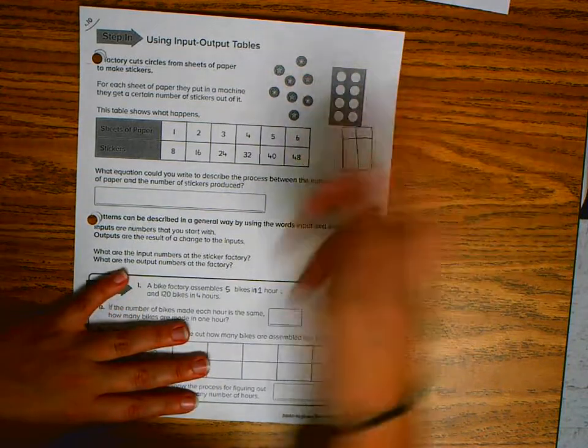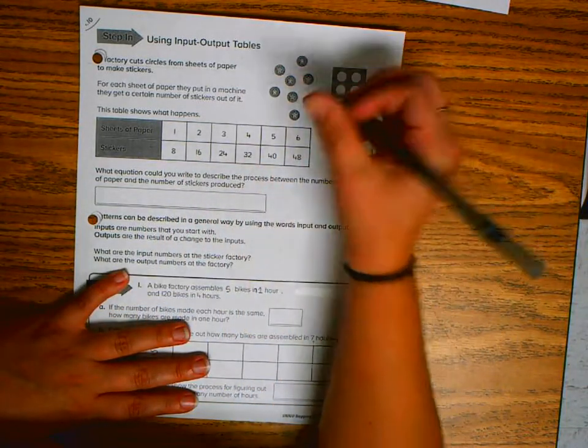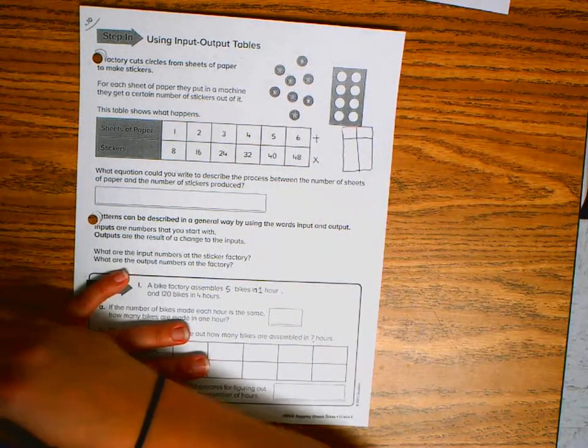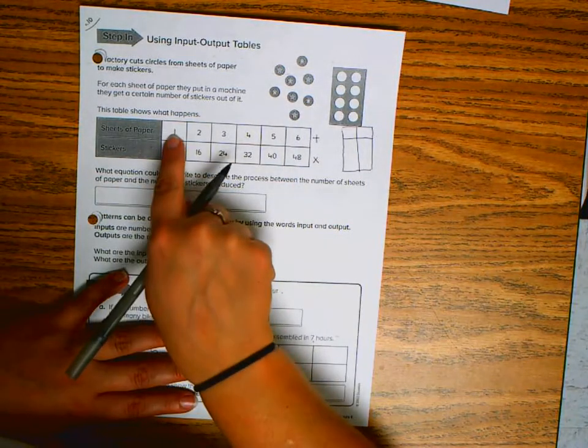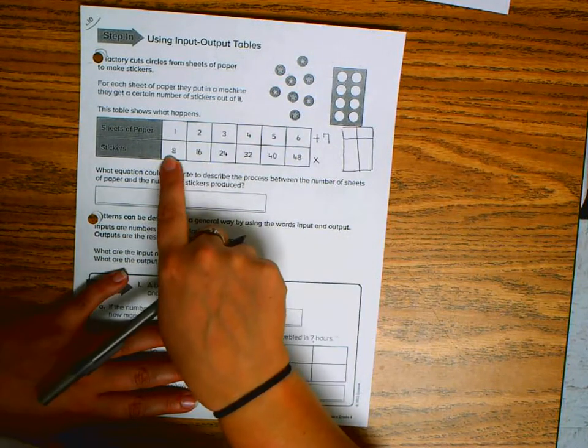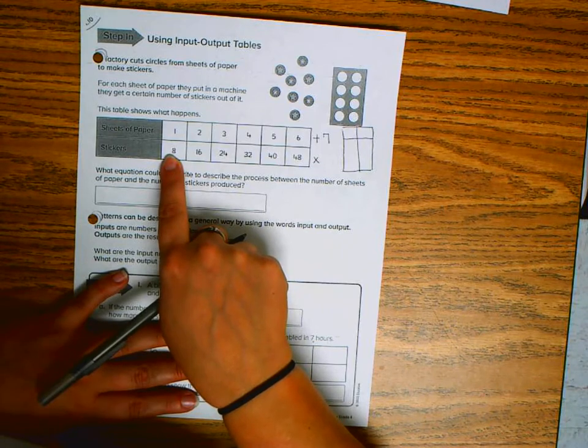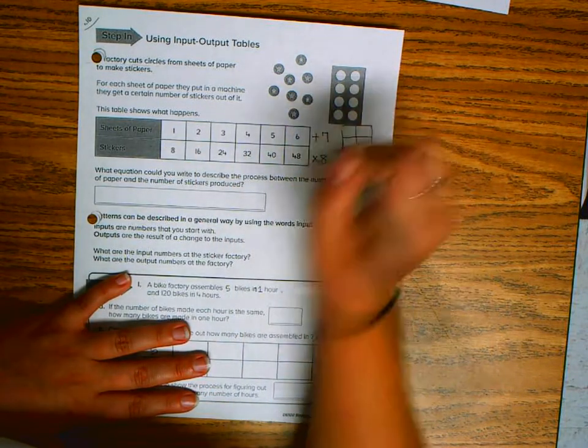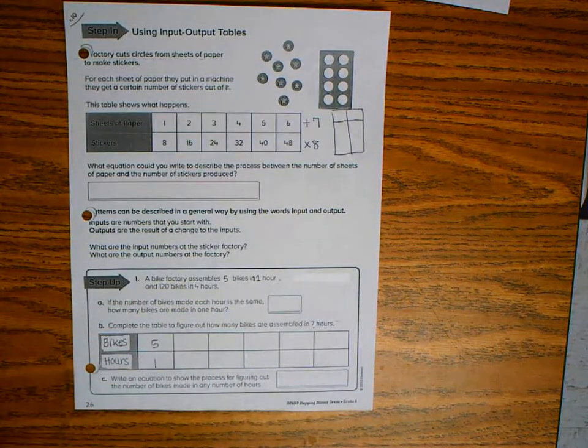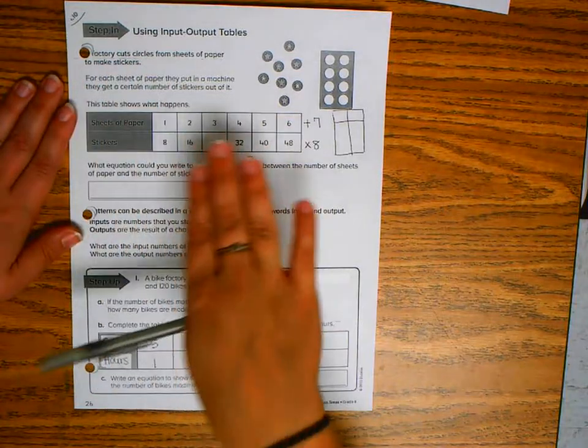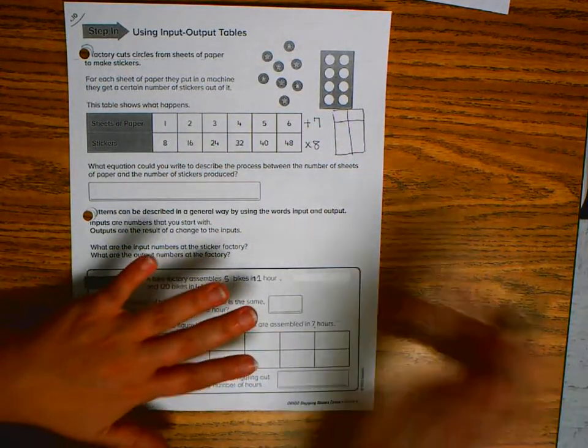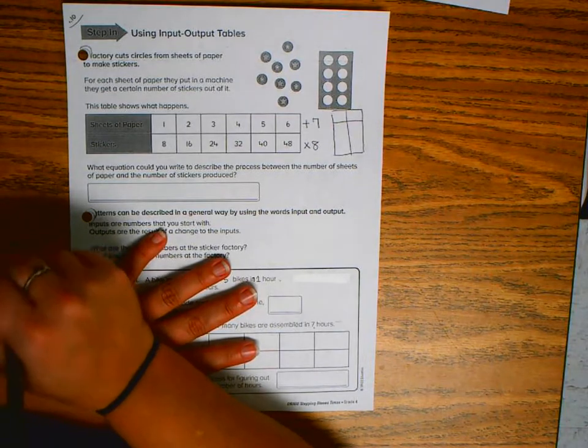Since we are getting a larger number as our outcome, we are either adding or multiplying. One plus seven would get me my output of eight, or one times eight would get me eight. But your rule has to stay the same for the entire table because this is a pattern. Patterns repeat and stay the same, so our rule has to be the same for each one.